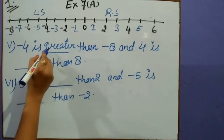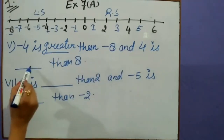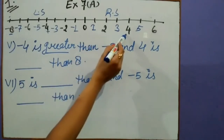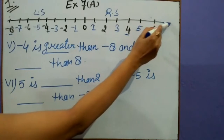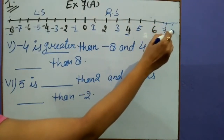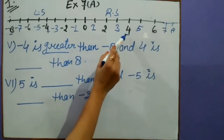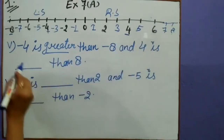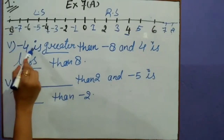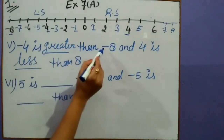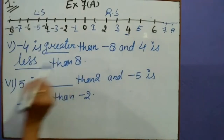Minus 4 is greater than minus 8, and 4 is blank than 8. 4 is here and 8 is there. 4 is less than 8, so we will write here: less. Minus 4 is greater than minus 8 and 4 is less than 8.